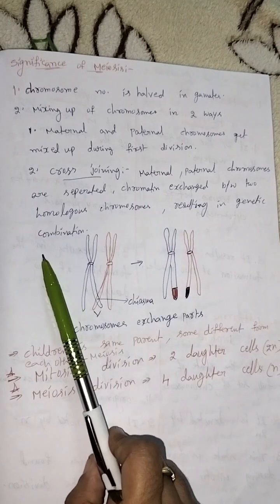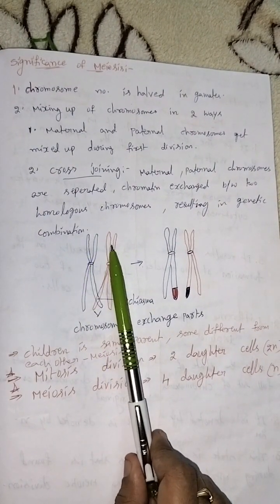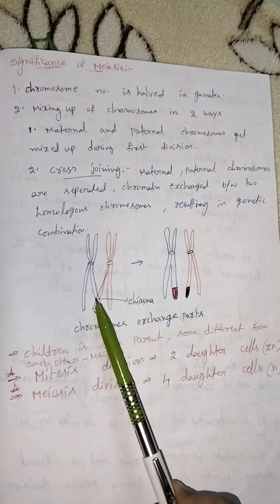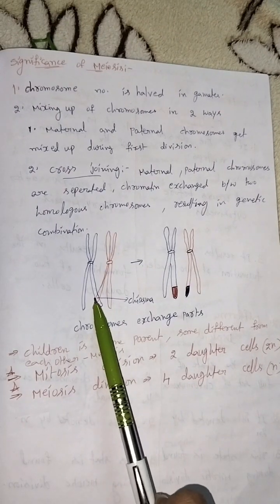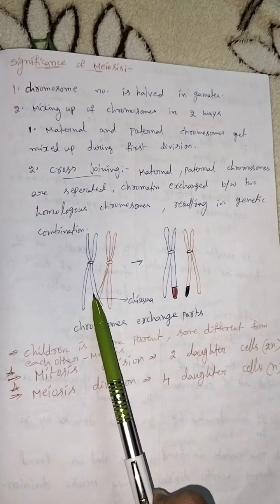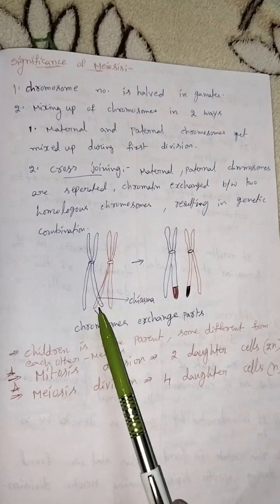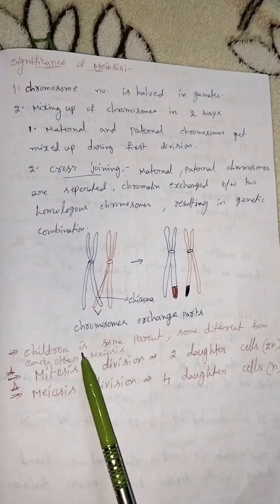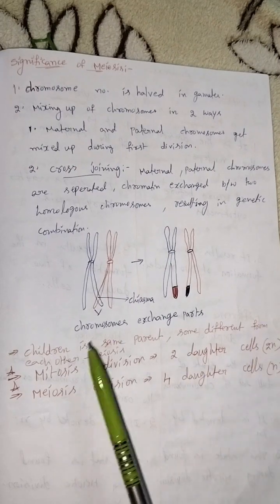Chromatin exchange between two homologous chromosomes results in genetic recombination. For example, this is the maternal and paternal chromosomes. They cross join at this place, called chiasma, and the chromatin material is transferred to each other.